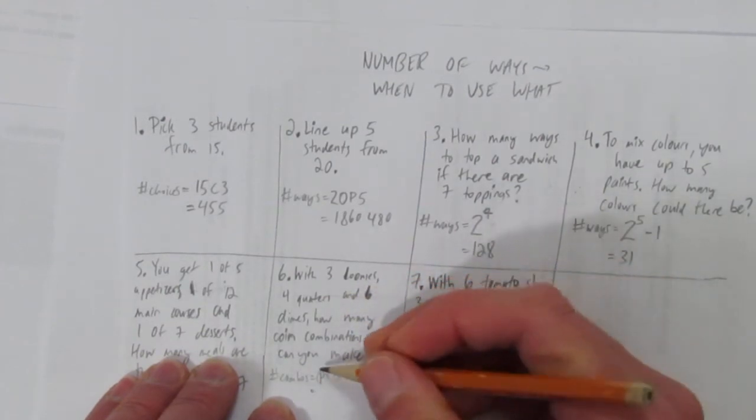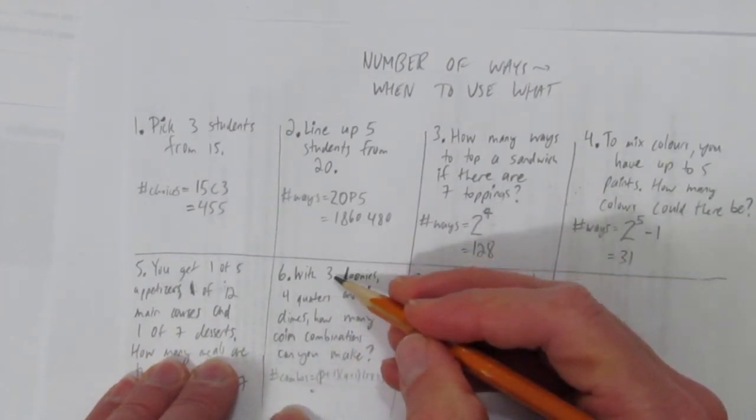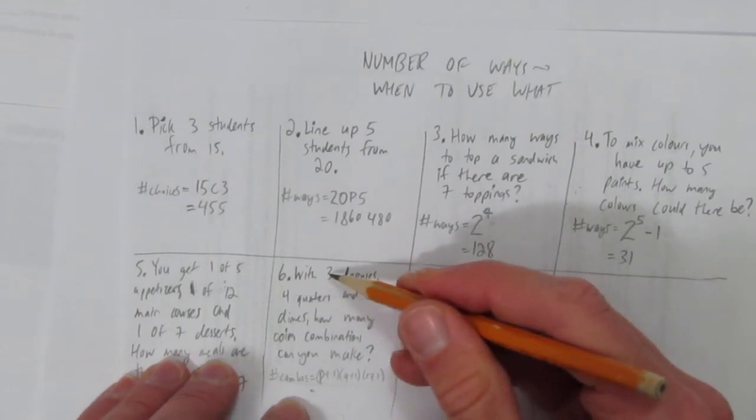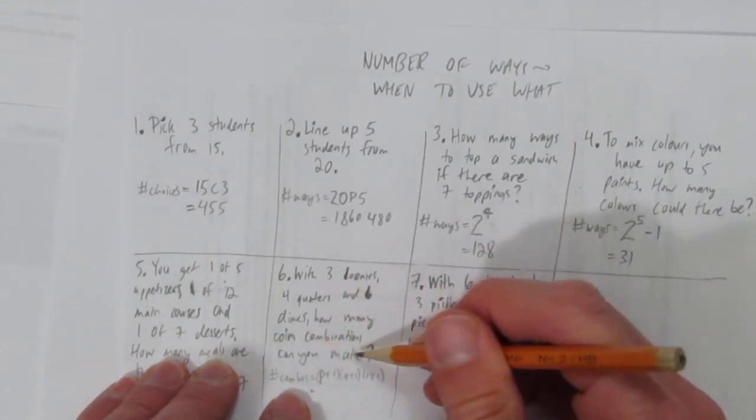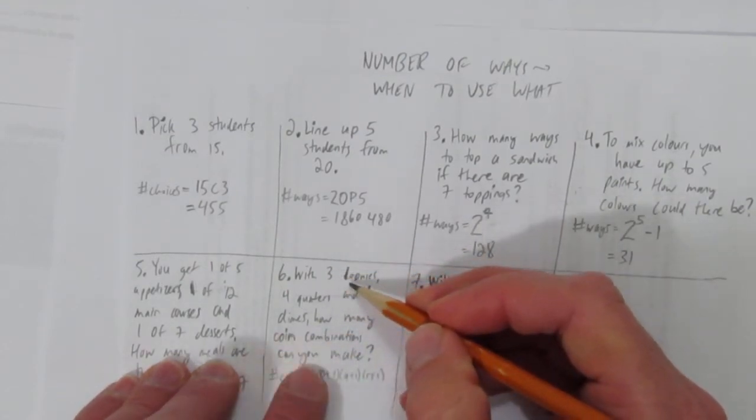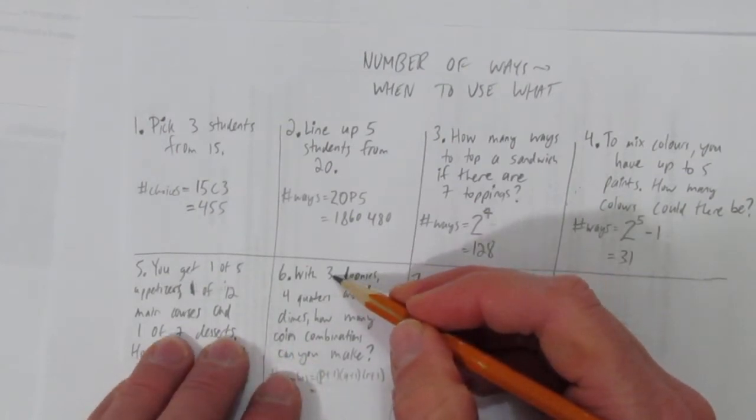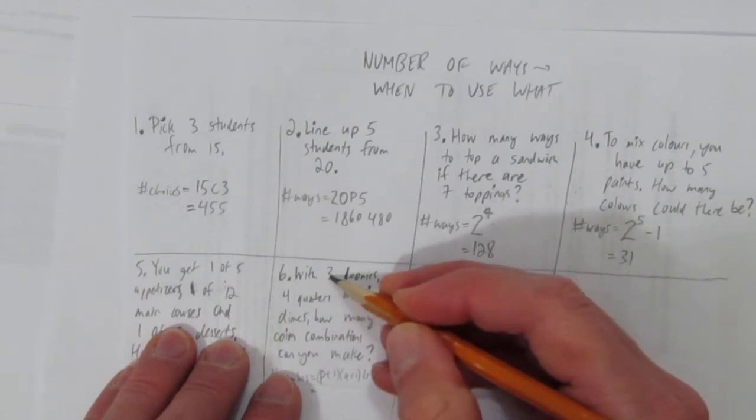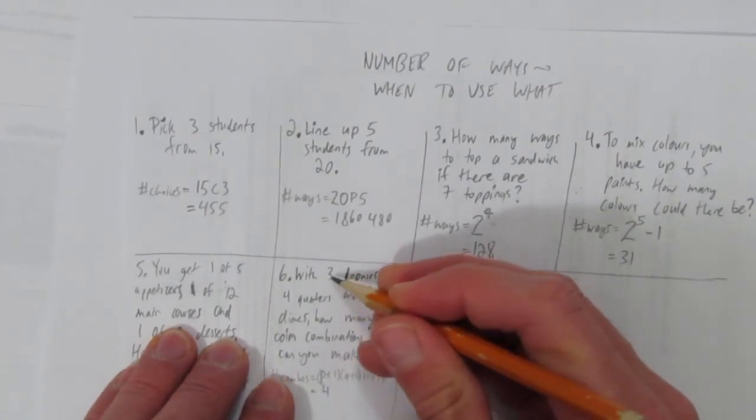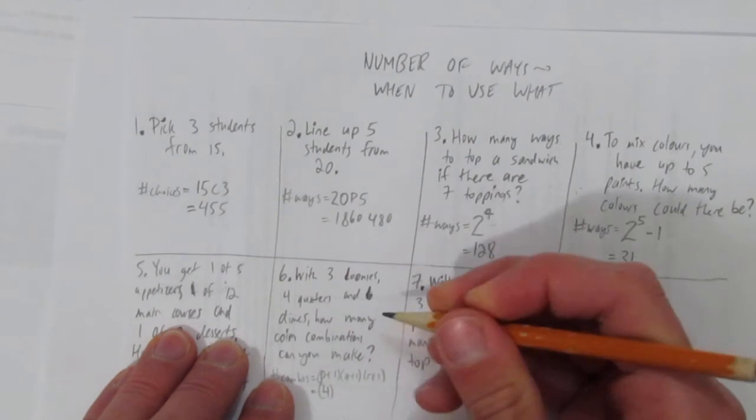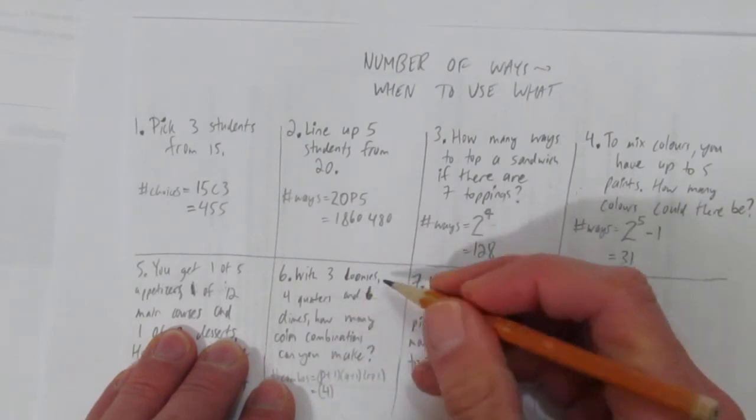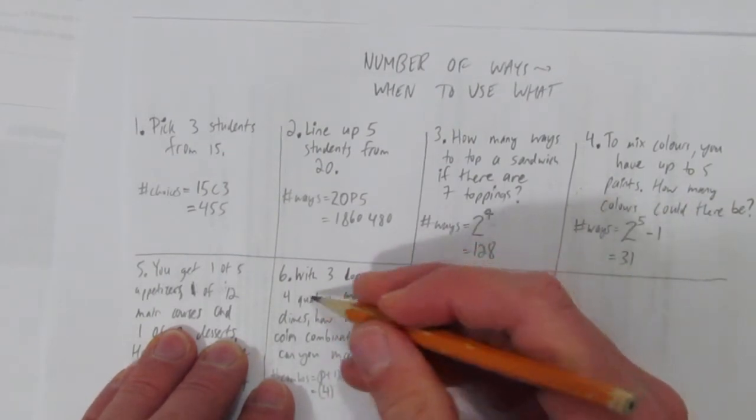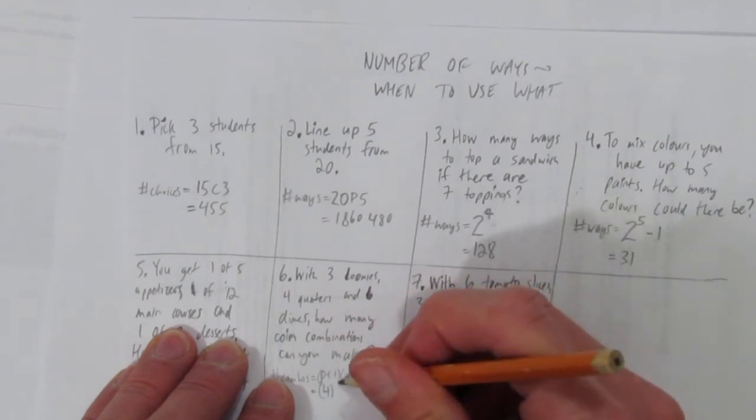This just means, look, you have choices and you have to include them, but each loonie is the same. When you're making coin combinations, you could choose one loonie, two loonies, or three loonies. So you put a three in here, or plus one because you could choose no loonies. There's four choices: one, two, three, or nothing. Same thing with quarters. You could choose no quarters, one, two, three, or four quarters for five possibilities.